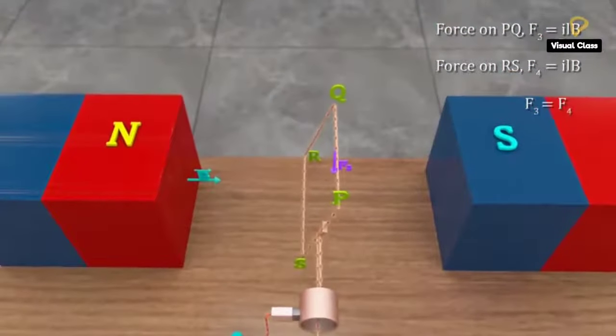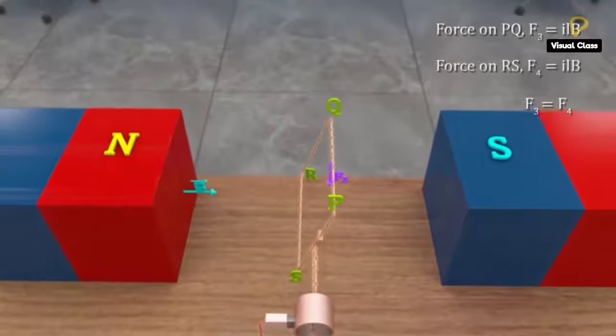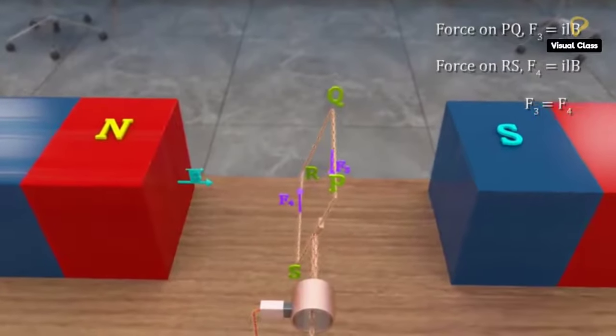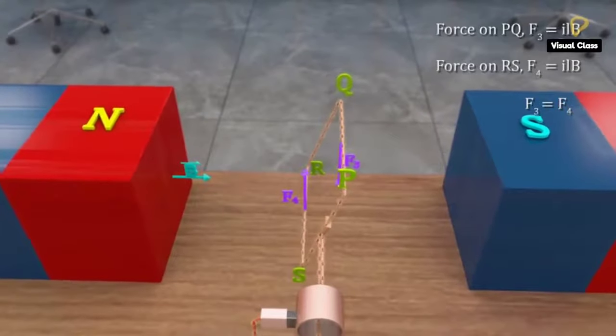Magnitude of the force on PQ is equal to the magnitude of force on RS, but they don't have the same line of action. Hence, they produce a couple due to which the coil tends to rotate in the clockwise direction.